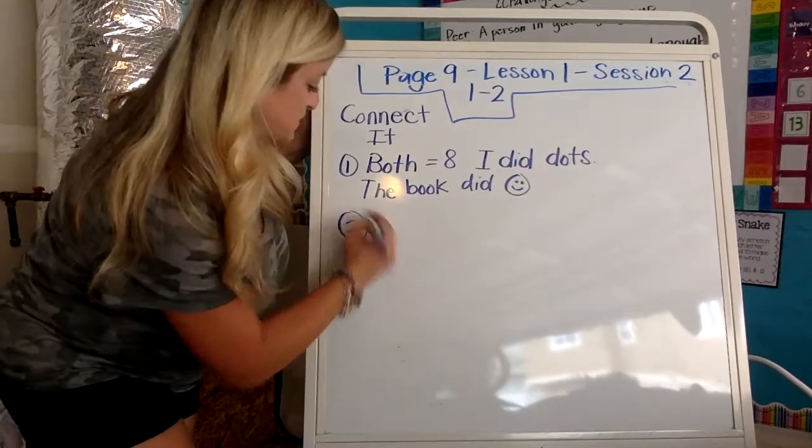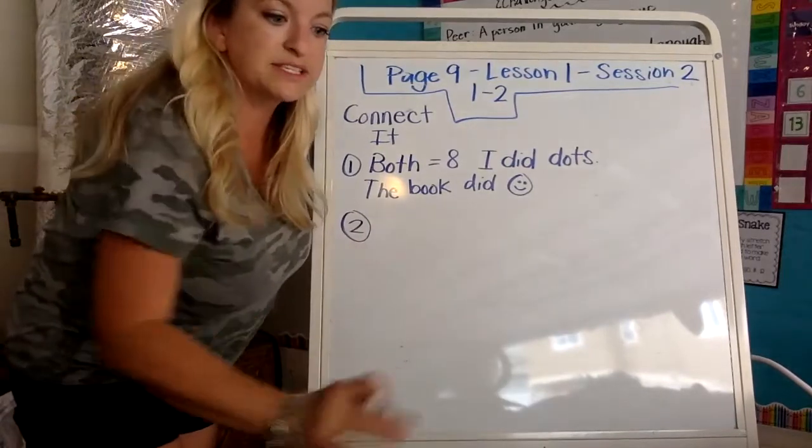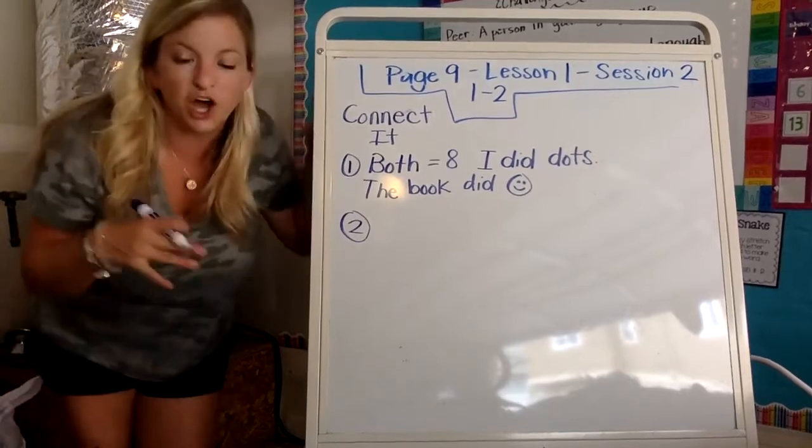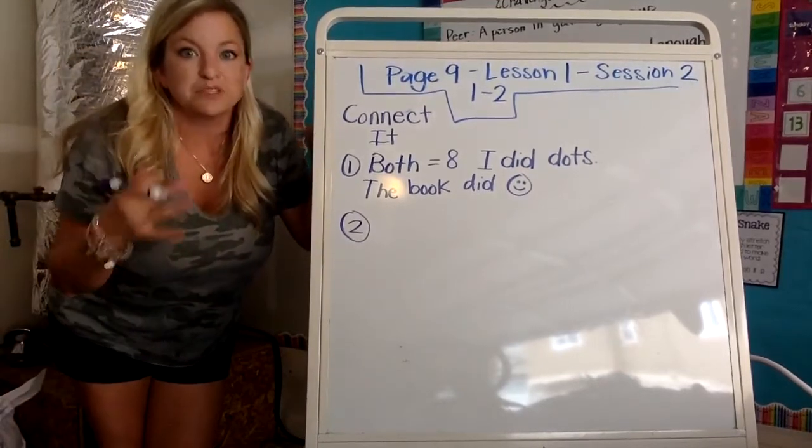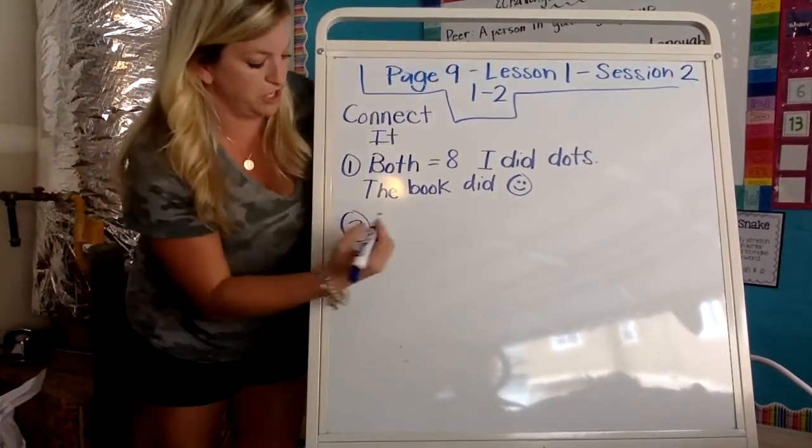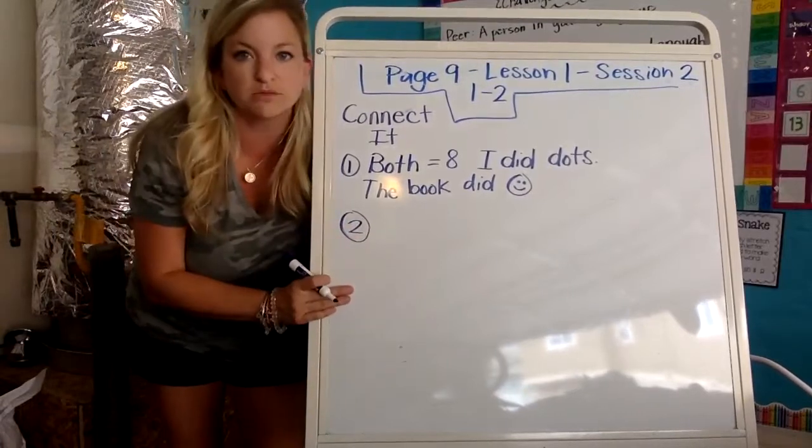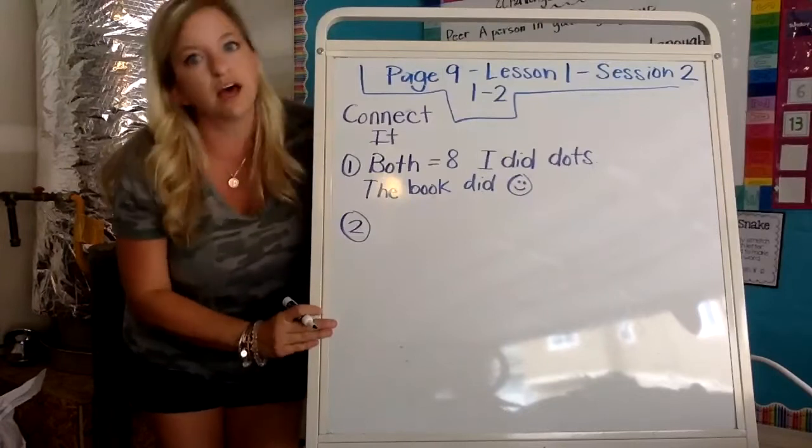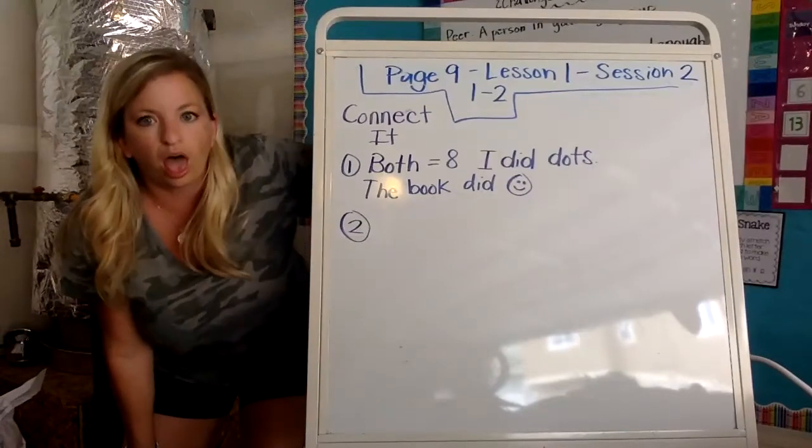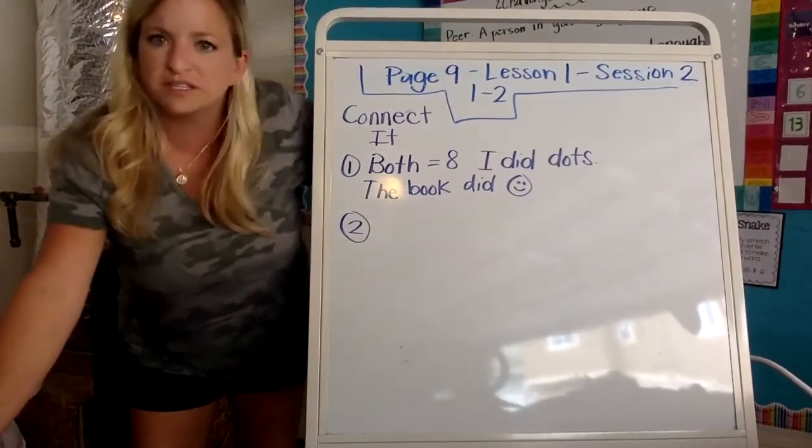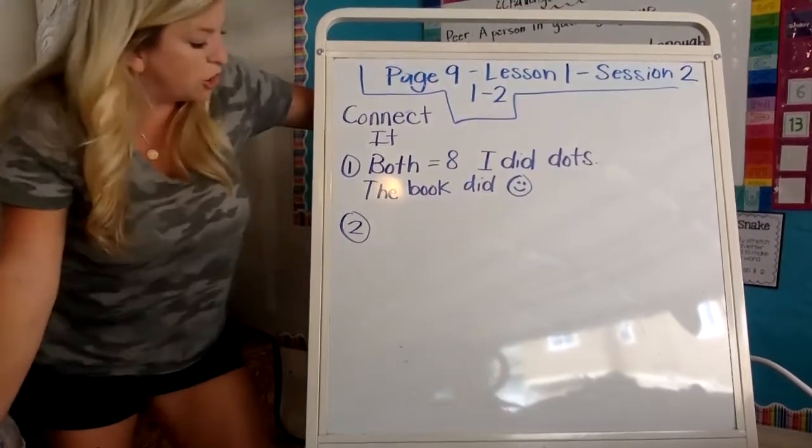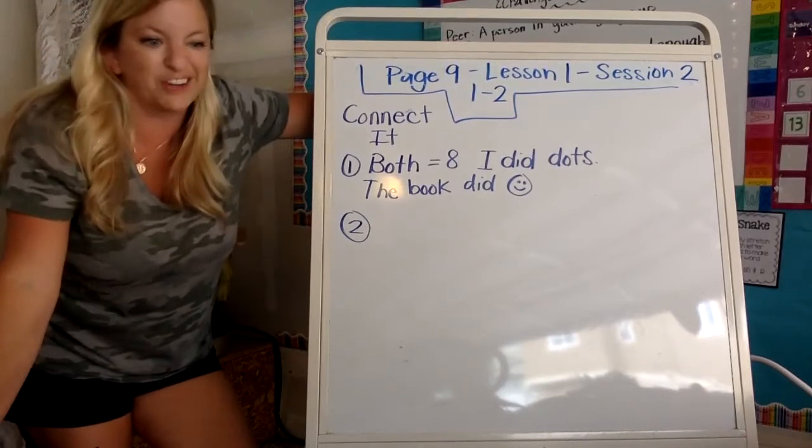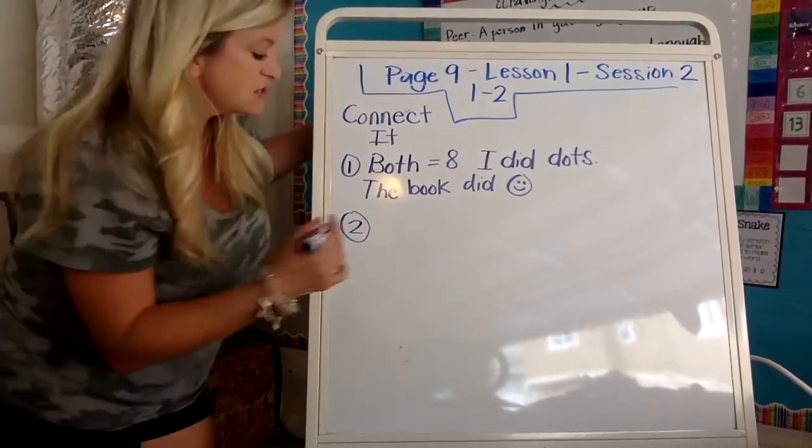Number two on this page, it says, how is counting on different from counting all? So counting on, I'm starting with the number that I know. So counting all of it is where I would say one, two, three, four, five, six, seven, eight. So I'm going to explain why counting on is different. So counting on, I start.